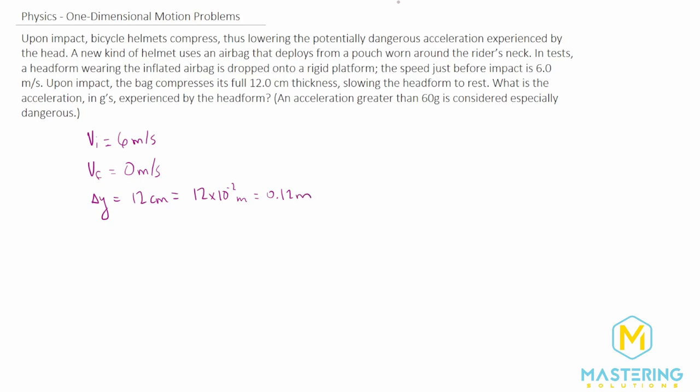Now they want us to know what is the acceleration in G's experienced by the head form. They say acceleration greater than 60 is especially dangerous. So we're trying to make sure it's less than 60 for our answer. We want to see if the answer we get is less than 60, which would make it less dangerous for the person.